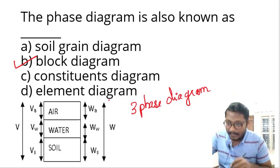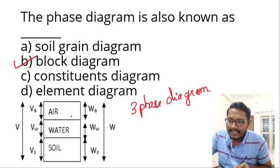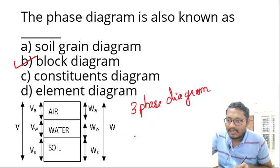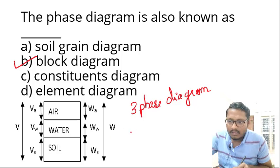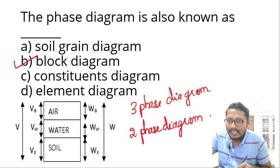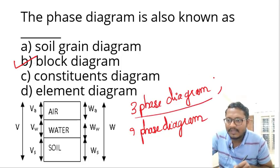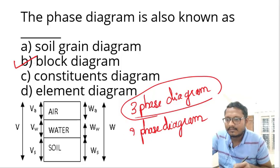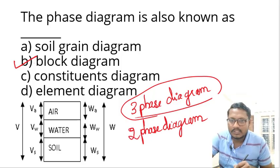If a soil is saturated completely, there is no air in the soil. For a saturated soil, we call it a two-phase diagram. Generally, for a partially saturated soil, there is always a three-phase diagram.